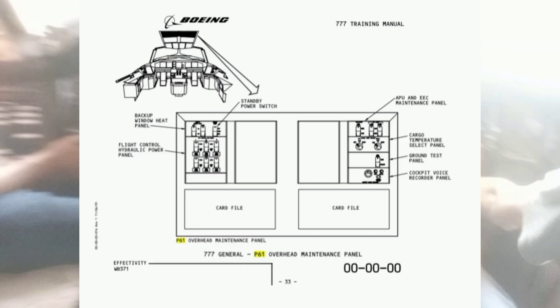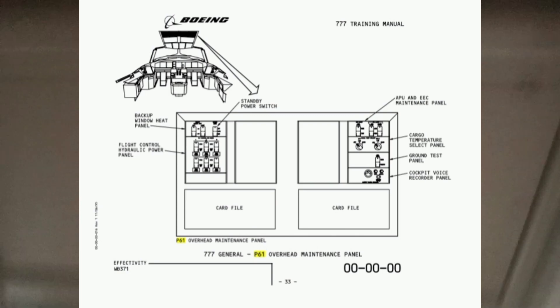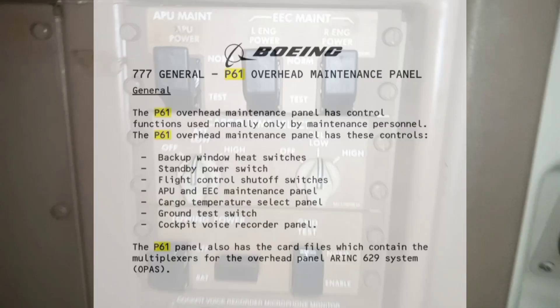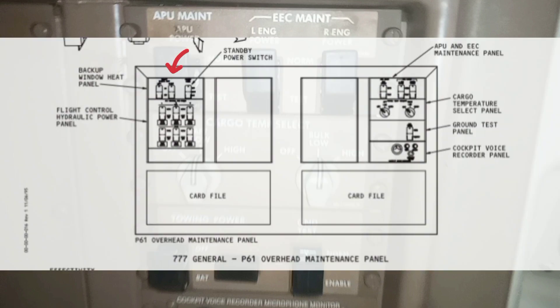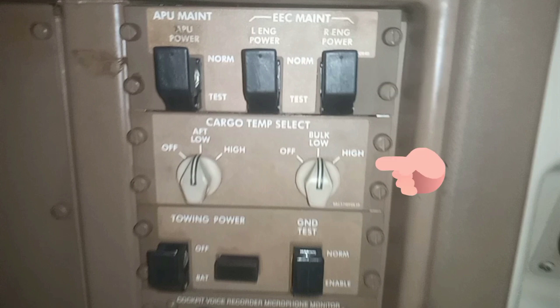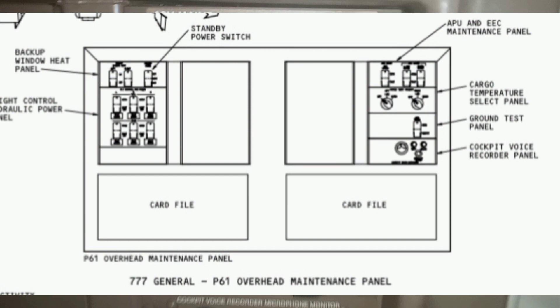In this video I will show you the P61 overhead maintenance panel on Boeing 777 aircraft. The P61 overhead maintenance panel has control functions used normally only by maintenance personnel. The P61 overhead maintenance panel has these controls: backup window heat switches, standby power switch, flight control shutoff switches, APU and EEC maintenance panel, cargo temperature select panel, ground test switch, and cockpit voice recorder panel.